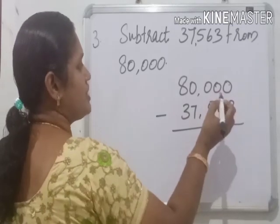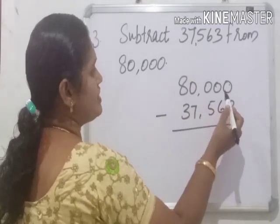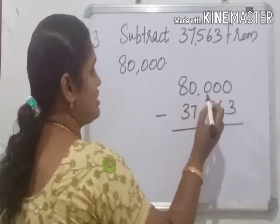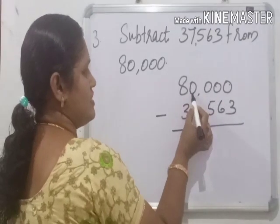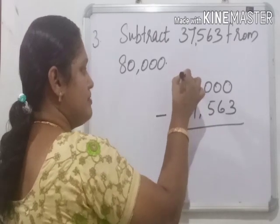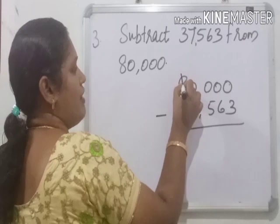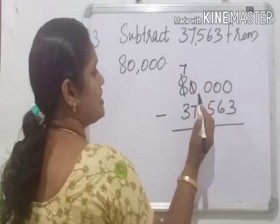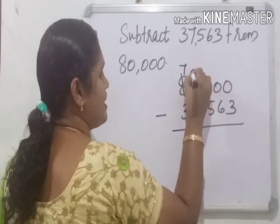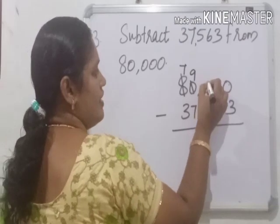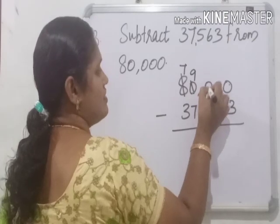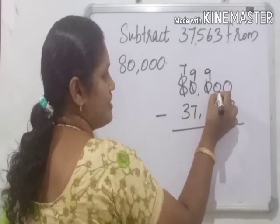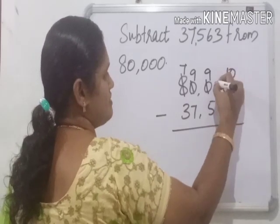We have to take 1 from the next place. But the next place is also 0, and the one after that is also 0. So we move to the next place that has a value. We take 1 from there — the 8 becomes 7, and that 0 becomes 10. We take 1 from 10, so it becomes 9, and the next place becomes 10. We continue this until the units place becomes 10, and the tens place becomes 9.